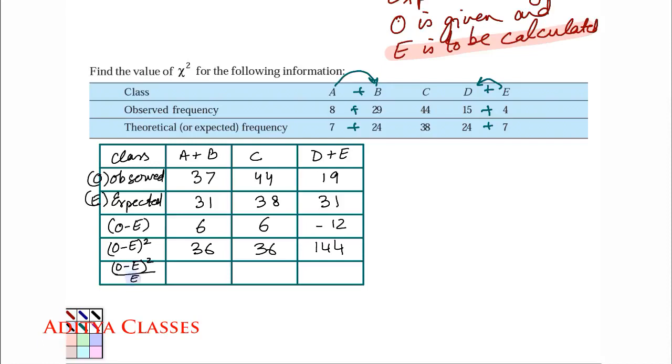And when I divide them by E, so O minus E square divided by E. So this becomes 36 divided by 31. O minus E square divided by E. This becomes O minus E square that is 36 divided by 38. And this last one becomes 144, O minus E square divided by E which is 31. If I solve these I get these values.